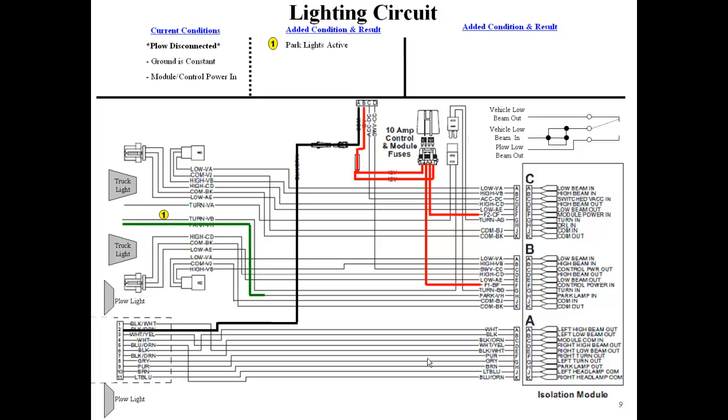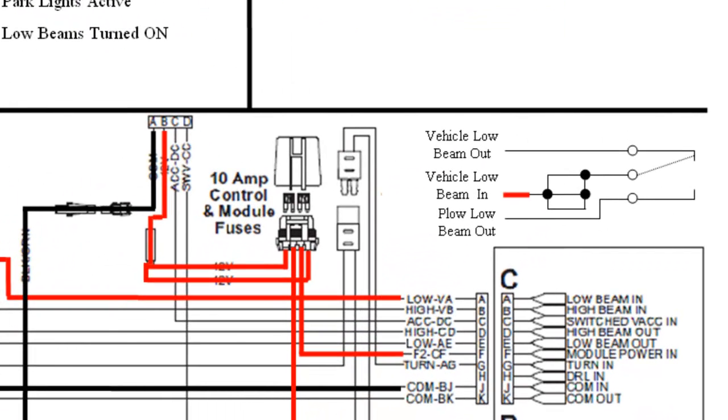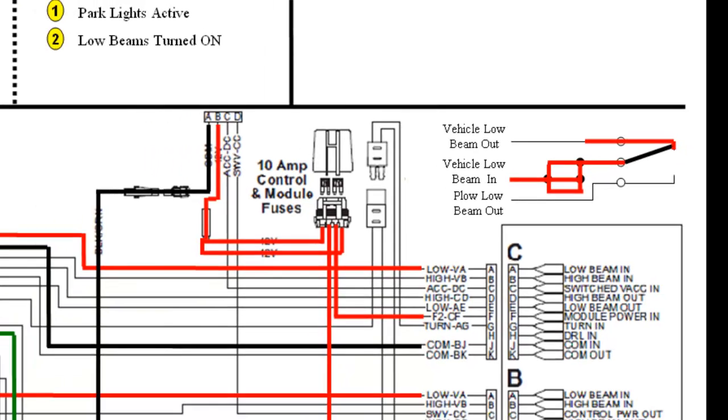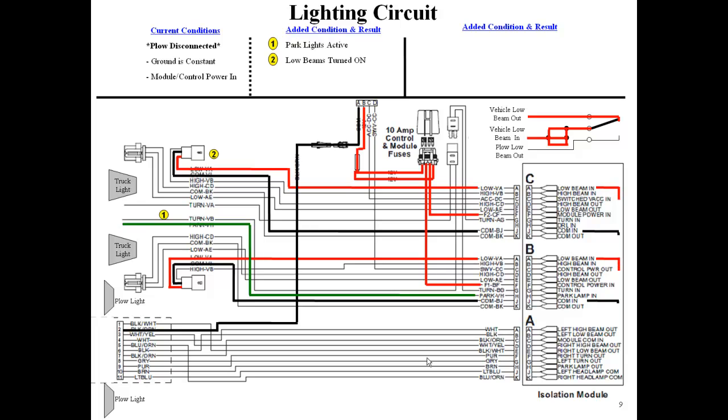Activating the park lamps switch in the cab sends 12 volts through the park tap wire to the isolation module. The low beam headlights are activated on the truck, which sends a signal to the isolation module and goes through the normally closed relays and back out to the truck lights, turning the low beams on.